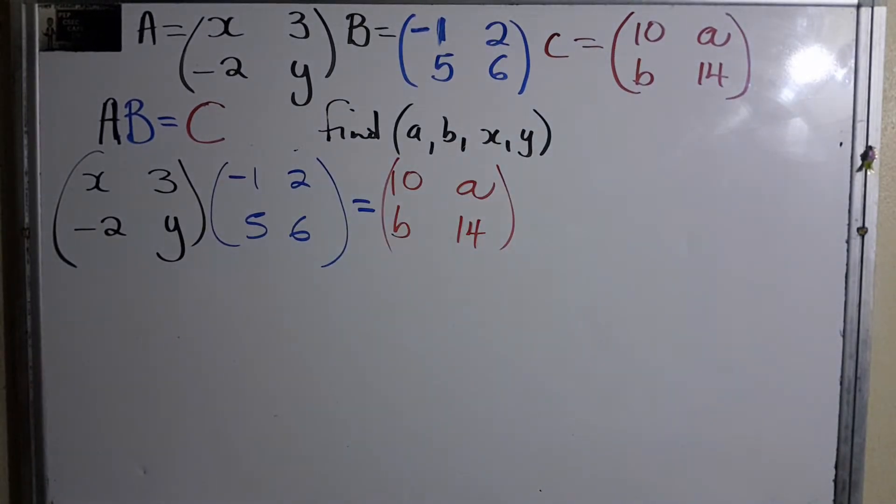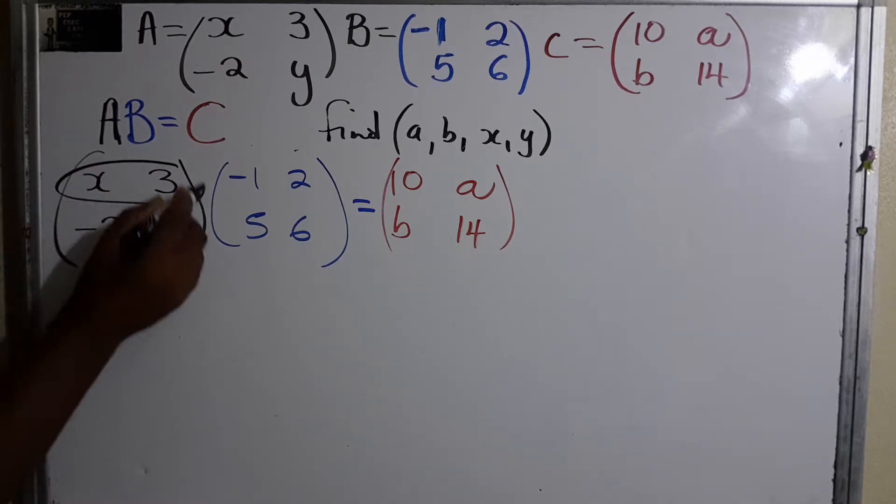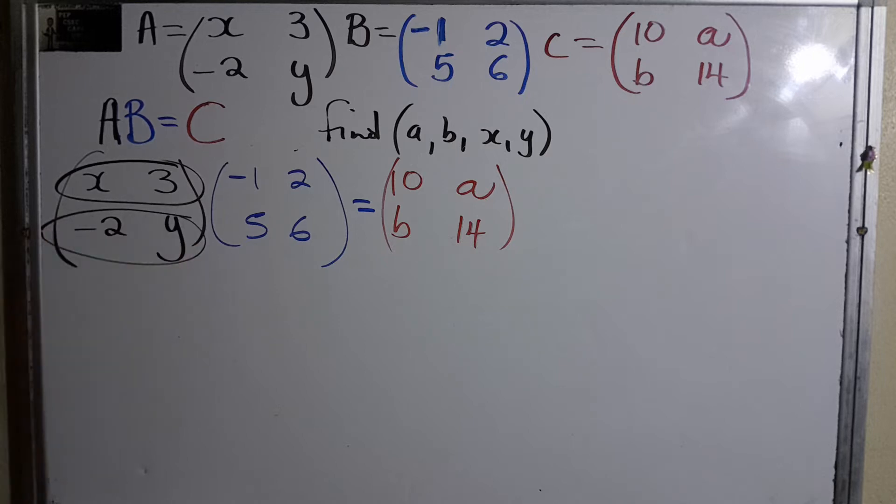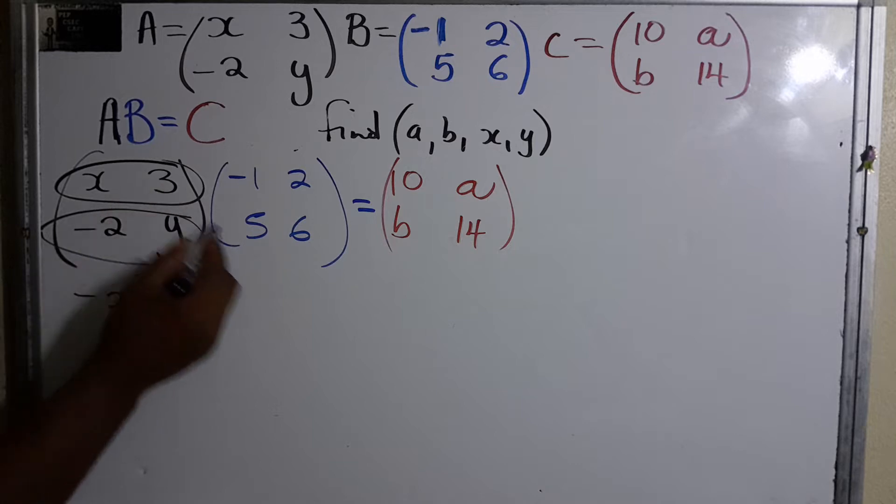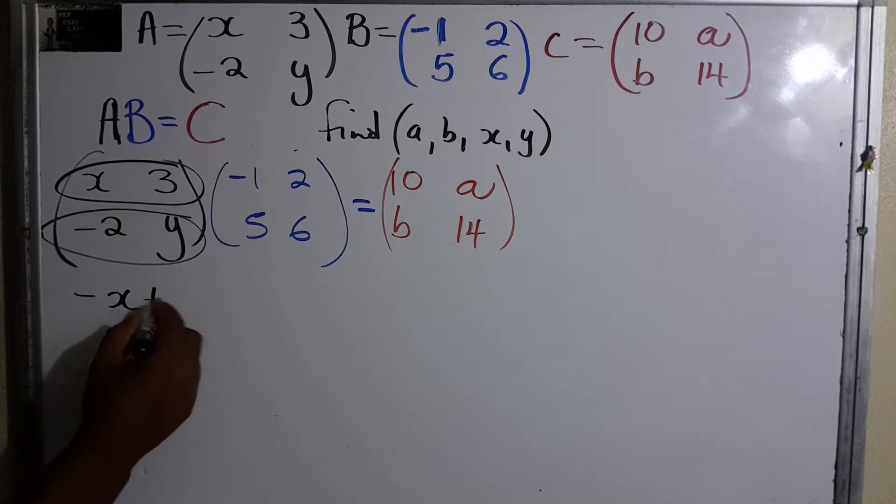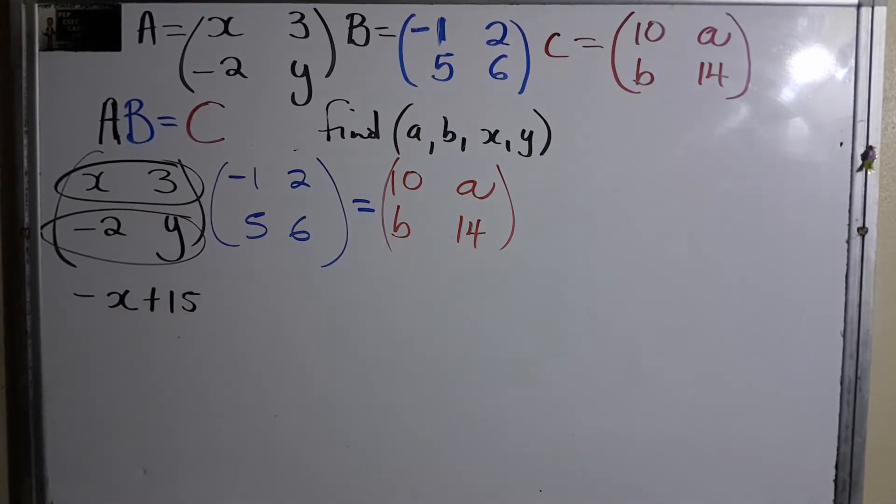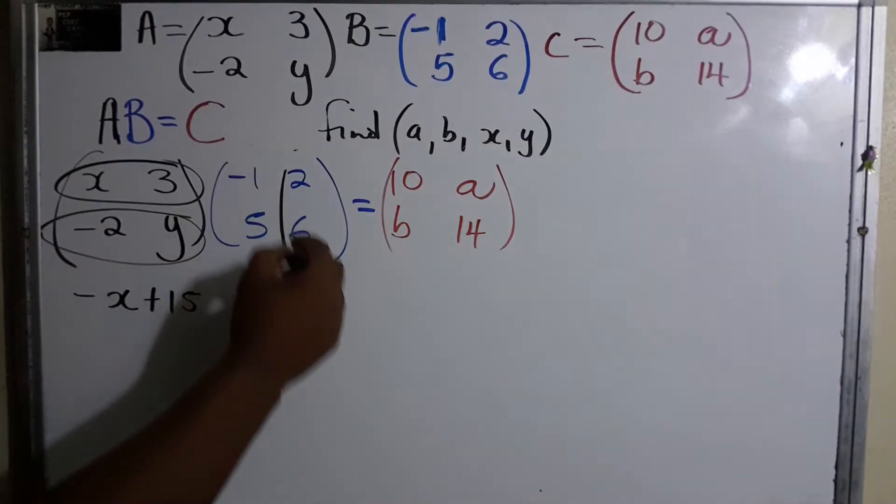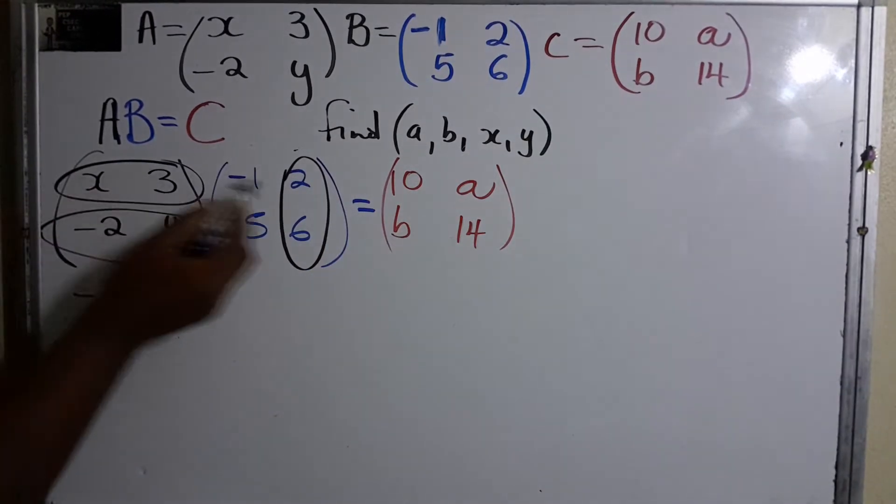We're gonna cut up the first one in rows because that's how we multiply matrices—it's row by column. We're trying to go as slow as possible. So x times -1, that will give us -x. 3 times 5, that will give us 15. We're done with this row.